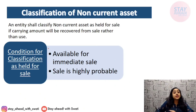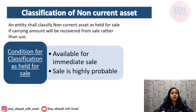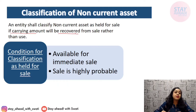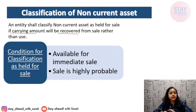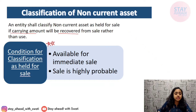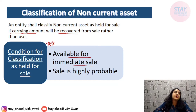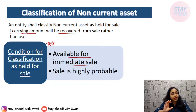Classification of non-current assets: an entity can classify a non-current asset as held for sale only and only when the carrying amount will be recovered from sale rather than from use. There are two major conditions for classifying such an asset as held for sale. First, it should be available for immediate sale. For example, if you have a building and plan to reconstruct or renovate it before reselling, it is not immediately available for sale and will not be classified as held for sale.